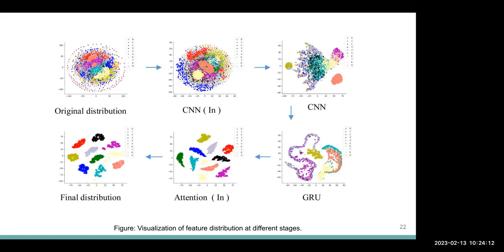These slides show visualization of the feature distribution at different stages during training. The authors show the change process of feature distribution from the initial stage to the final stage. In the beginning, the data features are clustered together with no apparent boundaries, and as training progresses the boundaries among the data features become more and more apparent.